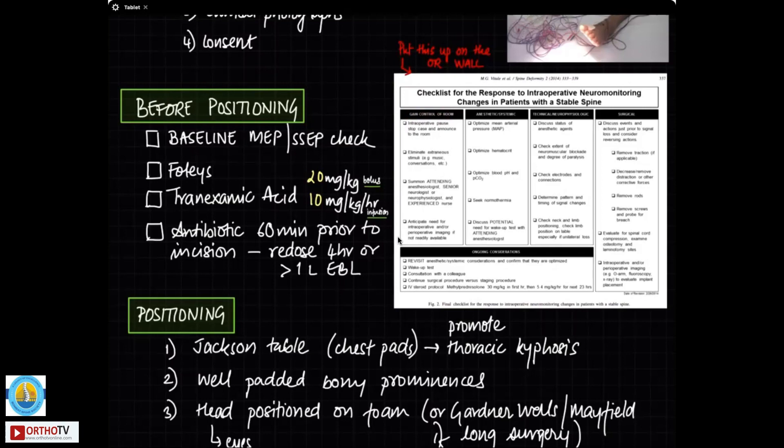These are the things that the surgeon has to do. These are the things that the anesthetist has to do. This is what the technician or the neurophysiologist will do. Here you can see that there is a wake-up test here if you are having ongoing considerations. So this is a good checklist that helps you respond to an intraoperative neuromonitoring alert and it's worth keeping with you.